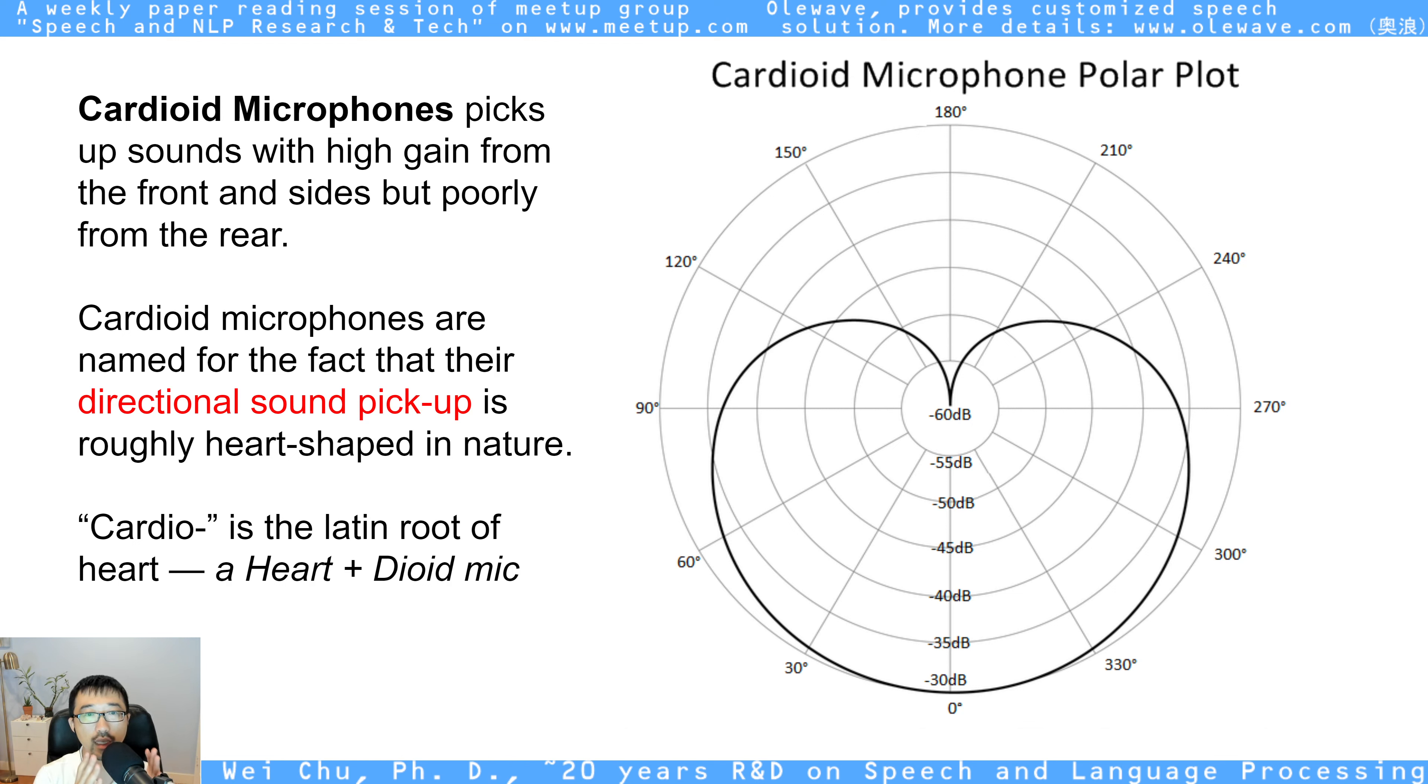So it picks up the sound with high gain from the front. So you can see this is the front. I really have to tell, I think this side is front. The left side is front. This side is front. But the right side, the back of it, it can sense poorly from the rear. So if I speak in front of it, something like this, or something like this, it will have a high gain.